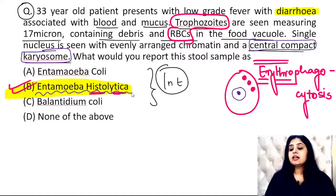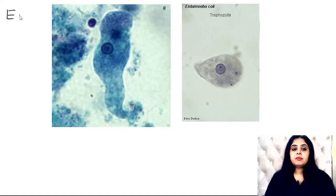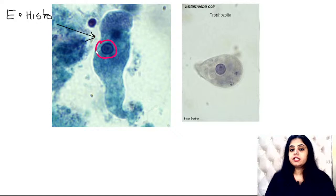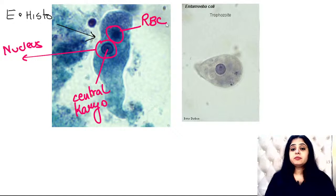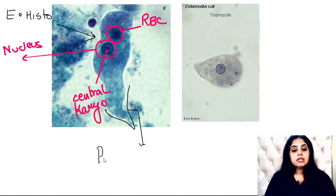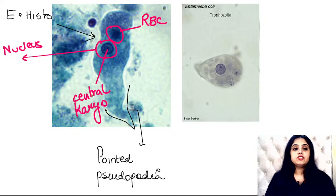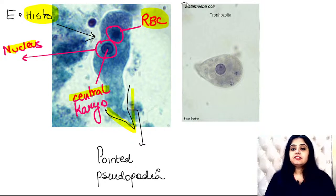Entamoeba histolytica: 'histo' means tissue, 'lytica' means breakage — it breaks tissue, causing bleeding, and eats red blood cells. The nucleus has a central compact karyosome. In the image, you can see the trophozoite with one nucleus, a central dot (karyosome), another dot which is the ingested RBC, and a pointed pseudopodia. Three identifying features: pointed pseudopodia, nucleus with central karyosome, and erythrophagocytosis — eating red blood cells.